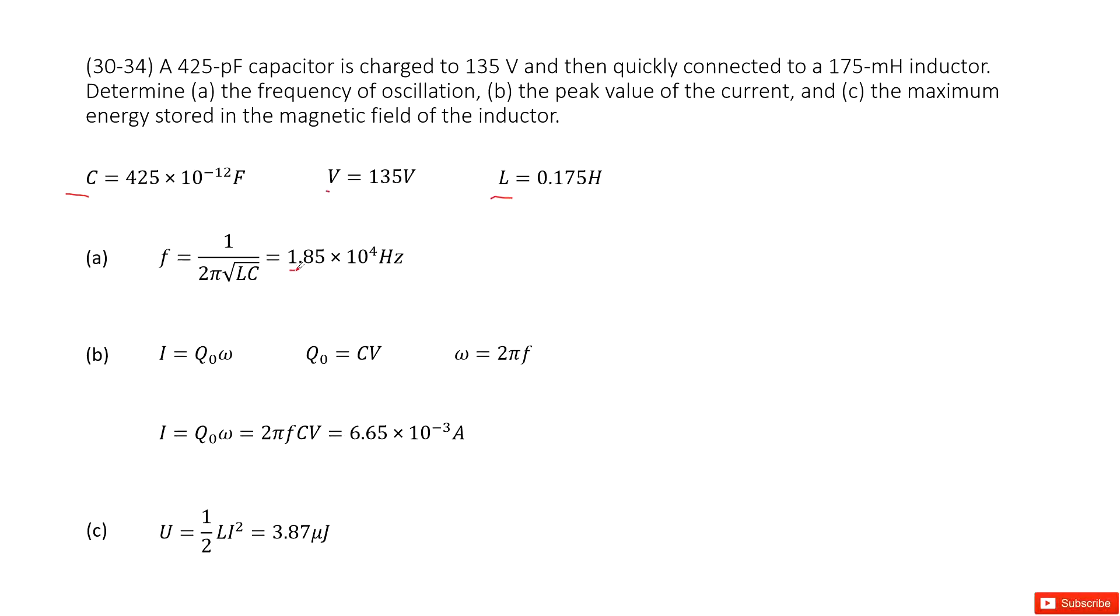The second part, we find the peak value for the current. As we know, the peak value for the current follows the peak charge times omega. Omega is called angular frequency, right? So it can be written as 2πf.